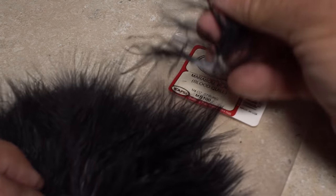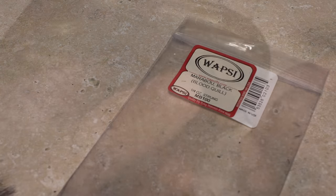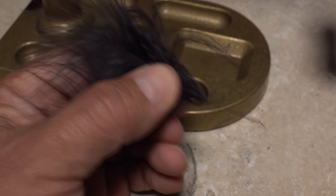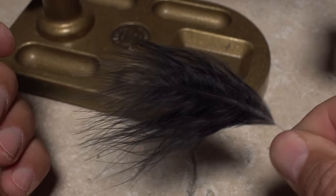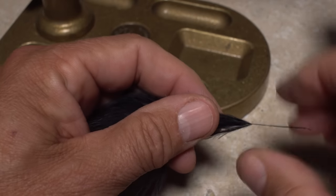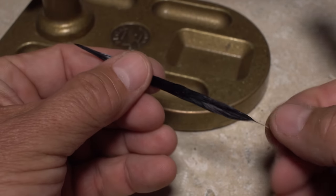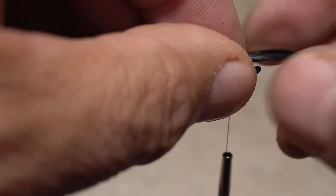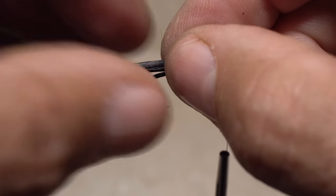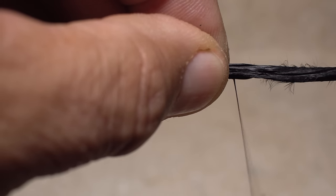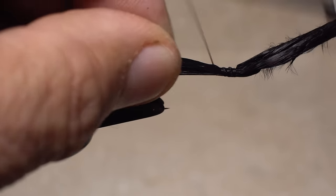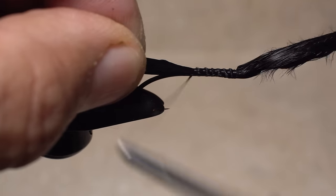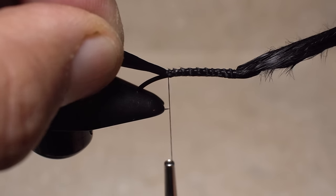For a tail a single black marabou blood quill is used. Prep the feather by stripping off any of the lower malformed or discolored fibers. As is almost always the case moistening the marabou really helps to keep it manageable during tie-in. Measure to form a tail of full hook in length and then transfer that measurement rearward to the start of the bend directly above the hook point. Begin taking wraps rearward with your tying thread to bind the marabou to the top of the hook shank. Keep taking wraps all the way back to the start of the bend.